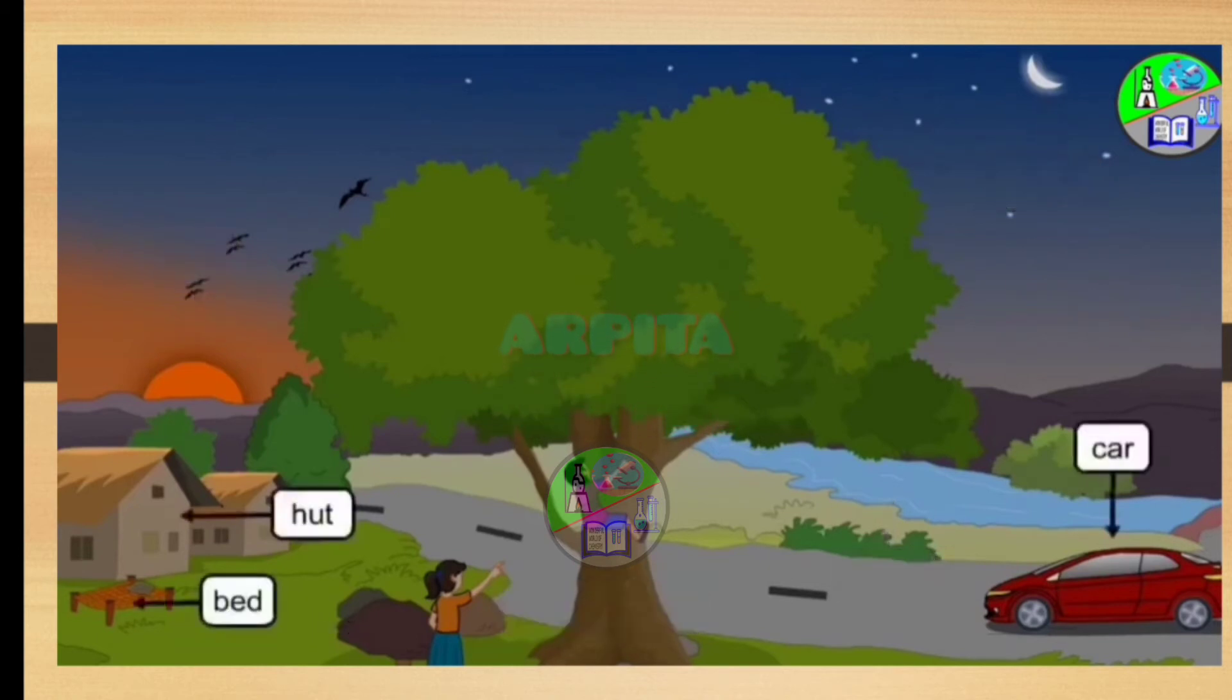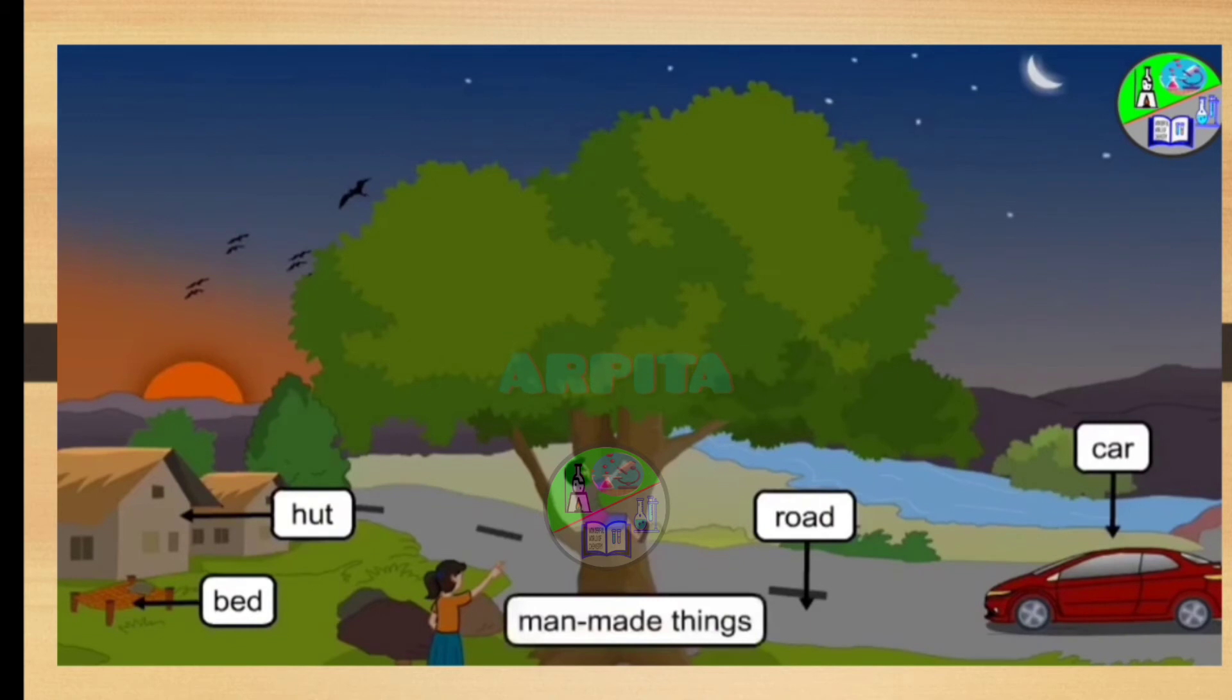But the hut, car, bed, road are made by man. They are man-made things. We make these things for our use.